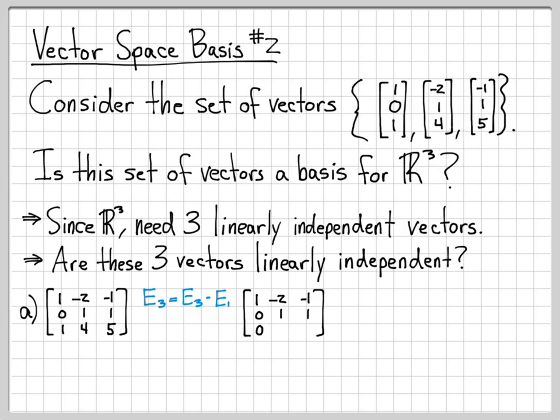1 minus 1 is 0. 4 minus -2 is 6. 5 minus a negative 1 will give me 6 as well. I'll go ahead and replace the third equation with the third equation minus 6 times the second equation. So I'm not touching the first two equations at all. I'm just going to modify the third one.